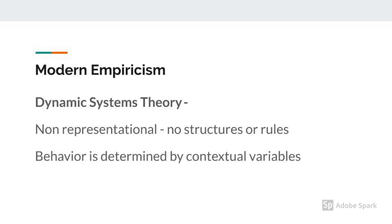Dynamic systems theory is also a descendant of early empiricism. However, it's quite different in that it suggests that there aren't specific rules that can be quantified. Rather, we all learn differently based on a complex variety of contextual variables which are different for individuals based on their environment and experiences.